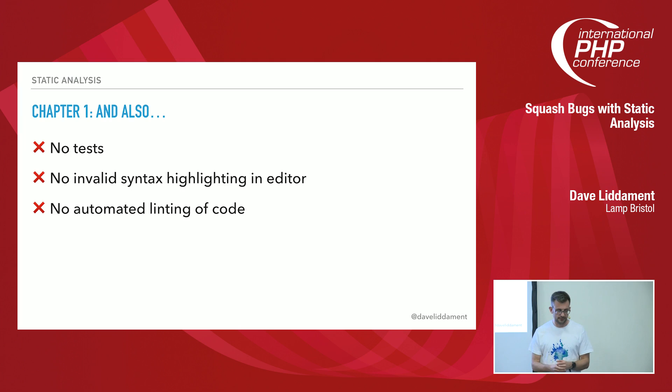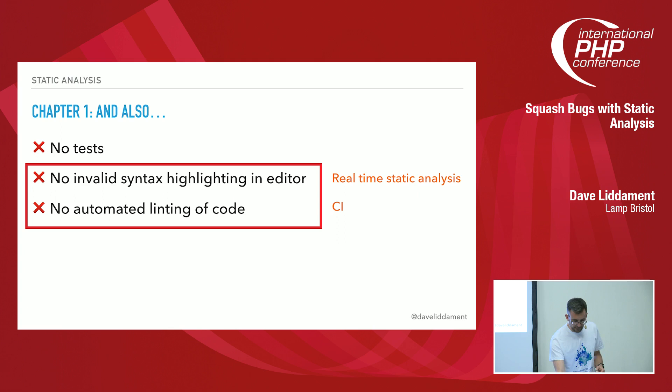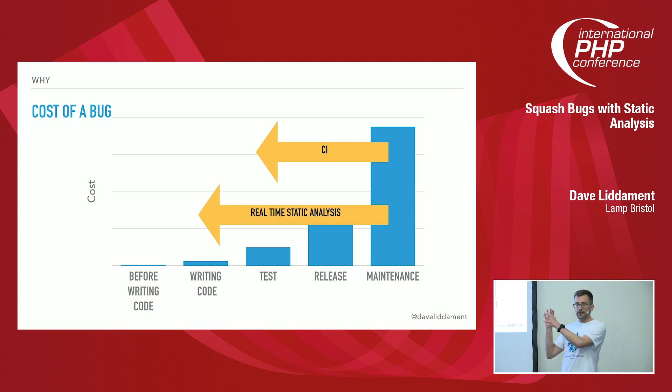I also didn't have any automated linting or basic static analysis to tell me I'd made mistakes. These last two points check the same thing — is the code correct? I'm going to call the first one real-time static analysis: if my code editor tells me I'm making mistakes as I make them, that's real-time static analysis, and it helps me fix or even prevent putting bugs in in the first place. The automated linting is something I'd do as part of CI, helping take bugs from that expensive maintenance phase and catching them earlier.